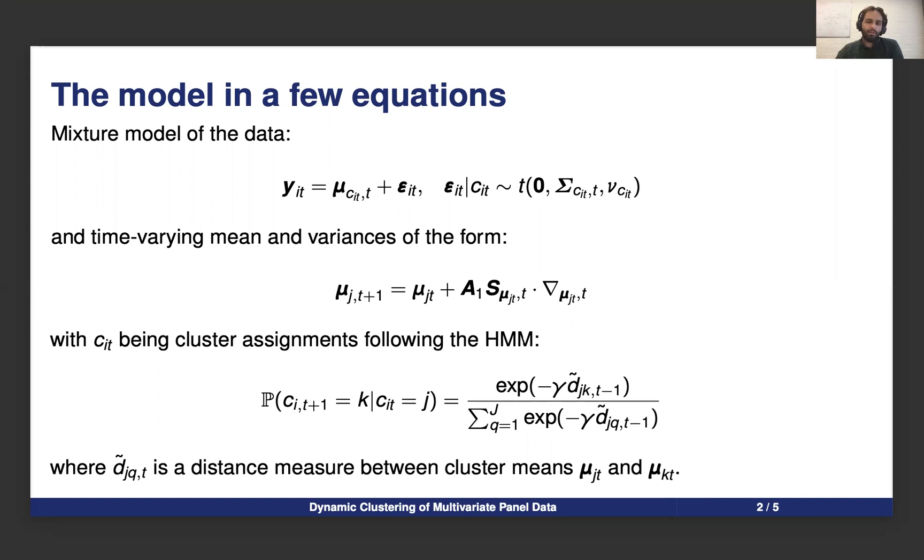The dynamics of the means and covariance are given by a score-driven model, and the cluster assignments follow a Hidden Markov chain. The probabilities of transition in this Markov chain depend on the distance between clusters. Clusters that are very close together will see more transitions between them, and clusters that are very far away will see less transitions.